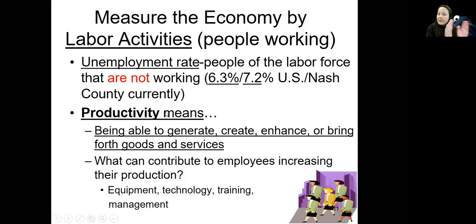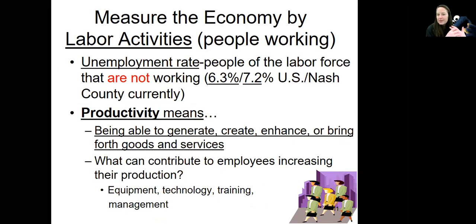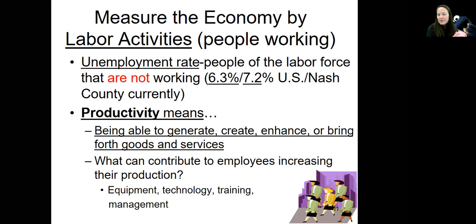Another way we measure productivity is by who's working — our labor. We measure that by looking at unemployment: people roughly ages 18 through 60 who are willing and able to work. The unemployment rate for the United States right now is 6.3%, and for Nash County it's 7.2%. So out of 100 people, only about six who are willing and able are out of work in our country. And with this COVID crisis, I think that's pretty great. Being productive means creating stuff, being innovative, coming up with new ideas — making burgers, making cell phones, driving Uber Eats, working at a restaurant, teaching.